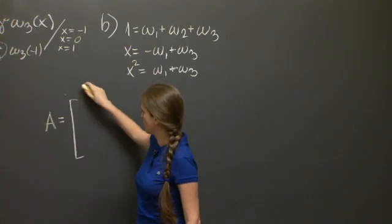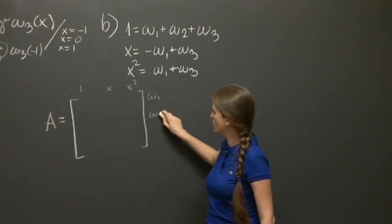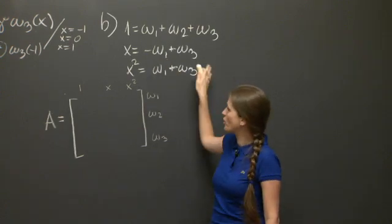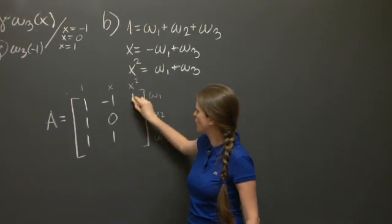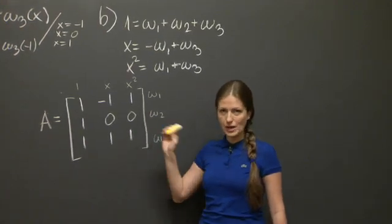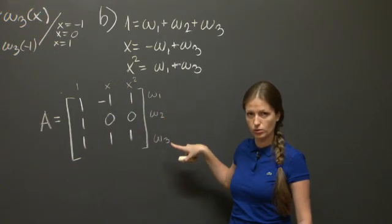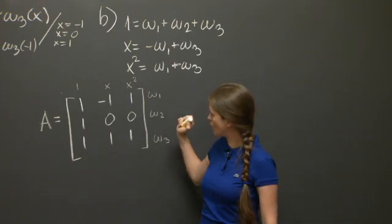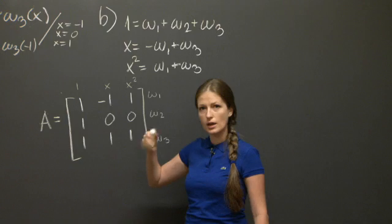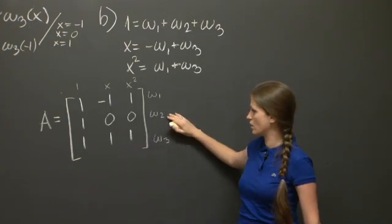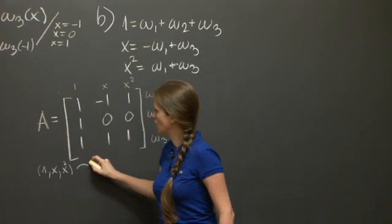And from this, we can immediately write one change of basis matrix. Namely, since we know how to express 1, x, and x squared in terms of w1, w2, and w3, we can just copy this information over to this matrix. So which matrix is this? This is a matrix, so we have 1, x, and x squared expressed in terms of w1, w2, and w3. So if we feed this matrix something expressed in the basis 1, x, and x squared, say a, b, and c, what it's going to throw out is the same polynomial expressed in this basis here, w1, w2, and w3. So I'm going to just write that this is a matrix of this basis change.